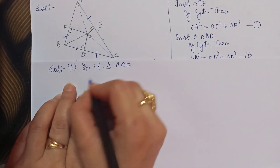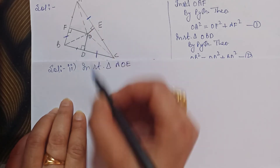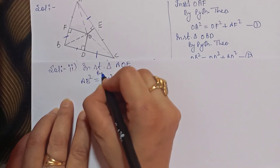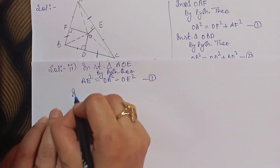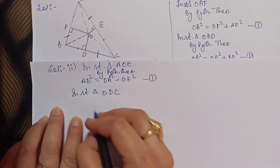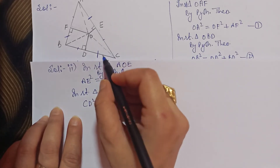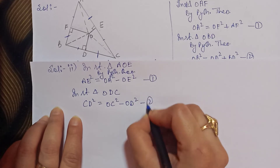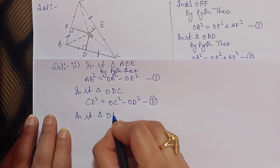In right triangle AOE، by Pythagoras theorem: AE² = OA² − OE². اس کو equation 1 لے لیں گے۔ In right triangle ODC: OC hypotenuse ہے، CD² = OC² − OD². یہ second equation آ گئی۔